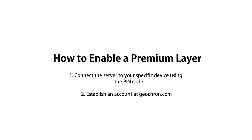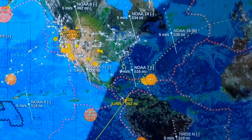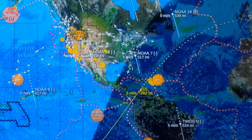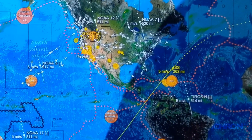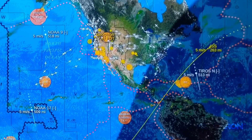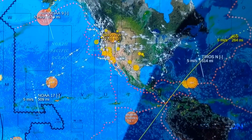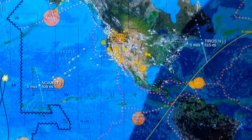This is Patrick at Geochron, and I'm going to walk you through a quick tutorial of how to enable a premium layer. We're going to connect the server to your specific device and establish an account for you on the website. The premium layers cost money to deliver to you and, in part, support the many layers that we provide at no charge as well. We'll use the earthquake layer as an example.